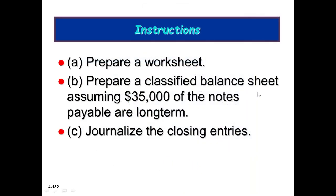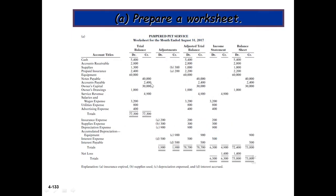Now we prepare the worksheet. The trial balance figures come from the question, and then we record the adjustments column. For adjustment number one, insurance expense is $200 debit and prepaid insurance is $200 credit.